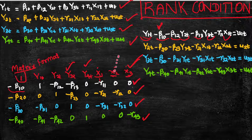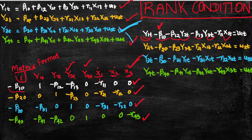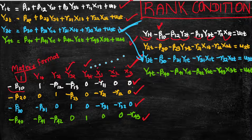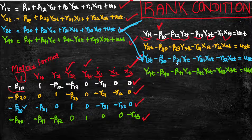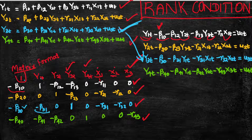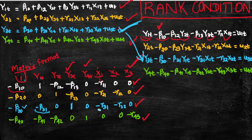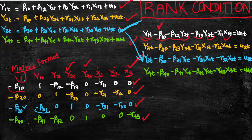These are the coefficients associated with the variables in each particular equation. For the third equation, y3t is present, so wherever y3t appears we write one. Then beta 30 is the intercept, negative beta 31 is for y1t, and for x1t we write the respective coefficient, negative gamma 31, along with its sign.